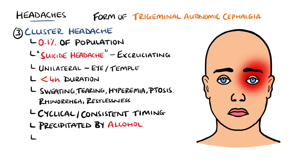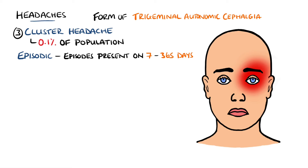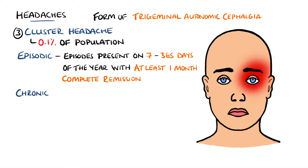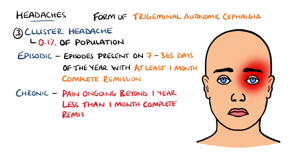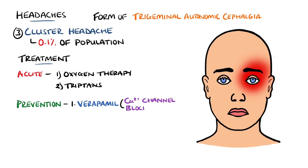These headaches are often seen more commonly in young men and in smokers. Episodic cluster headaches are classed as lasting between 7 and 365 days, with at least one month of complete remission. But if there is no pain-free month and the pain is ongoing beyond a year, it is classed as chronic. The treatment comes down to relief of acute episodes as well as the prevention of future episodes. Acutely, oxygen therapy is useful as are triptans, while prevention may include the calcium channel blocker verapamil, lithium, or topiramate, and in some cases deep brain or occipital nerve stimulation may be effective.